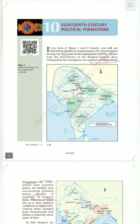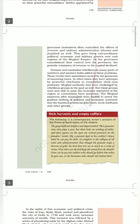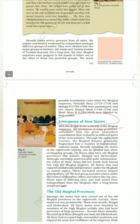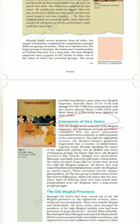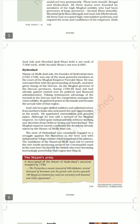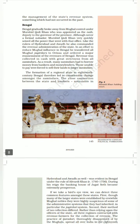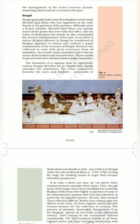This is NCERT Class 7, Chapter 10, and it is the first chapter of Modern India. It covers every small point, so when you are reading the chapter, go through this NCERT and you will complete this chapter too. Let's begin.